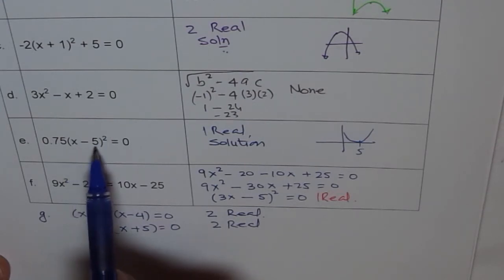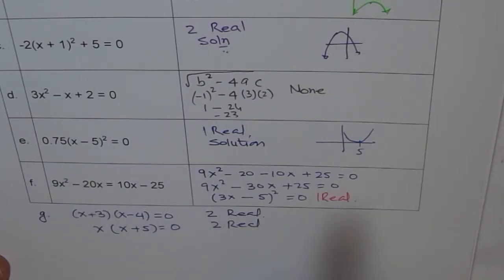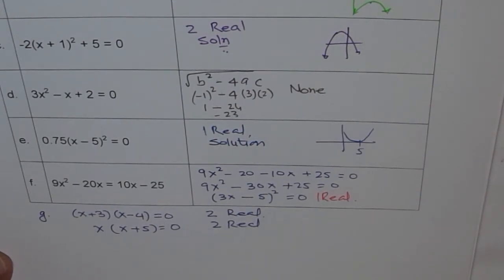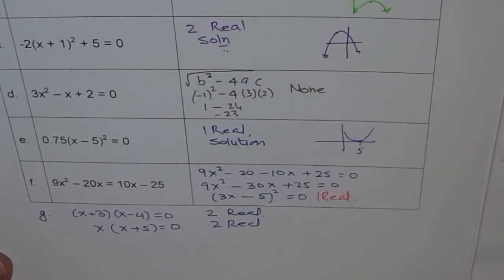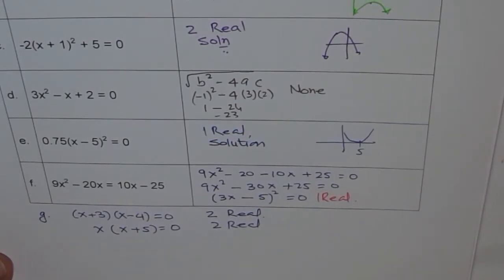There are a few like you can consider this to be factored form, both at one point. Anyway, I think you got a good idea of how to figure out from the equation about the number of real solutions. Thank you.